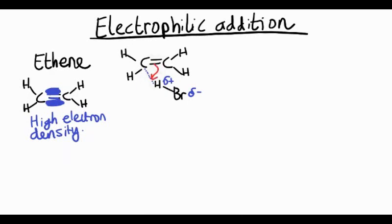The curly arrow shows a movement of an electron pair, so we're forming a bond between the carbon and hydrogen, breaking the bond between the hydrogen and bromine. Let's have a look at what we form.